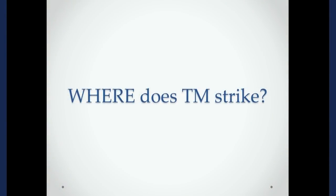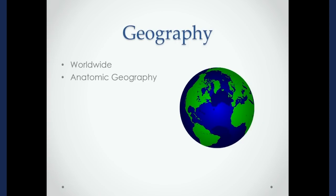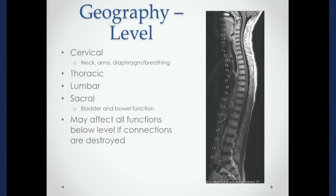Next question: where does transverse myelitis strike? In a general sense of geography, there's not a specific region where transverse myelitis is isolated — there may be some regional differences in types or timing. But I want to focus more on the anatomic geography, because it's really like real estate: location, location, location. Where is the inflammation and how much inflammation is there really affects how the patient presents — and that's not unique to idiopathic transverse myelitis, but to any condition affecting the spinal cord.